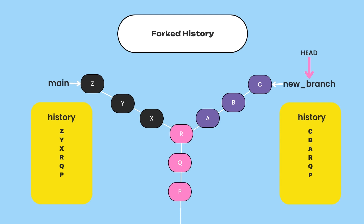For example, assume after creating commits p, q, r you created a new branch. In that new branch you've created three more commits — a, b, c. At the same time, inside the main branch you also created three more commits — x, y, z. So both the main and the new branch have diverged or forked histories. The history of the main branch looks like: z, y, x, r, q, p — whereas the history of the new branch looks like: c, b, a, r, q, p — where both branches share the same commit history up to commit r.